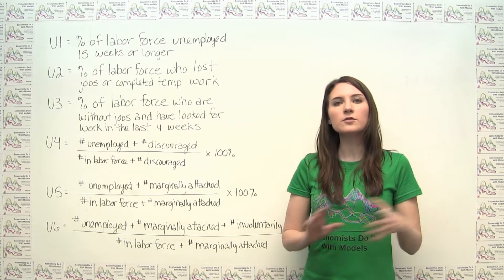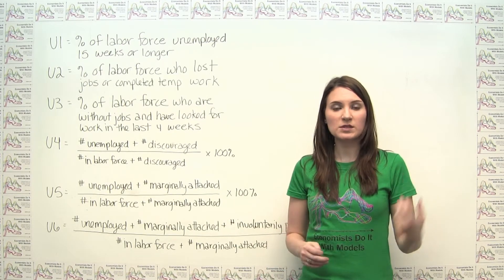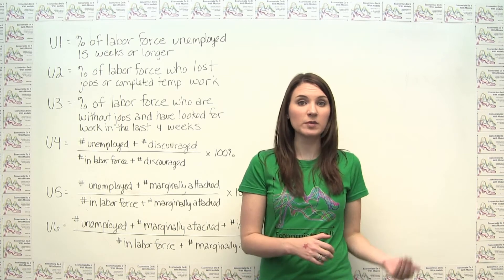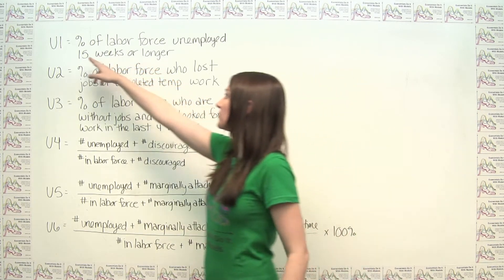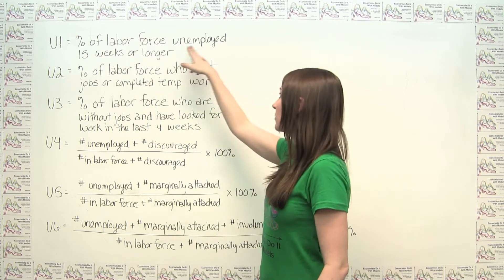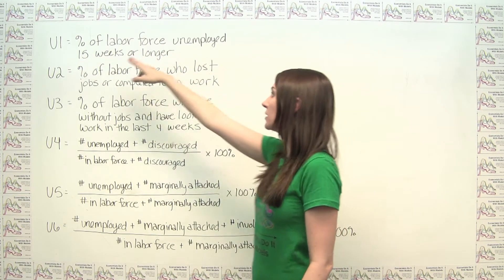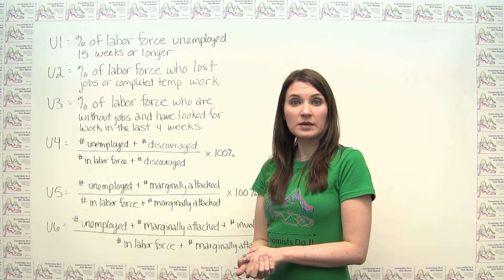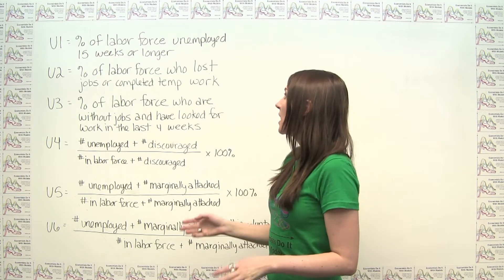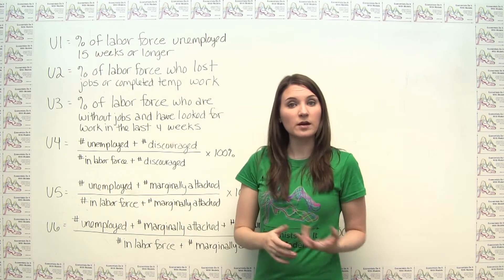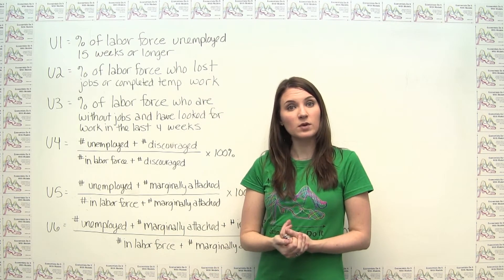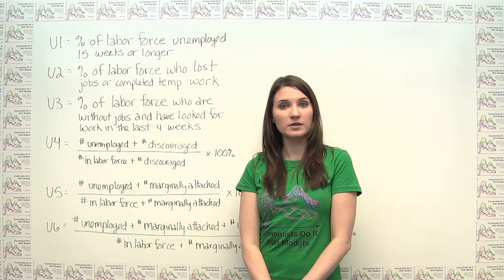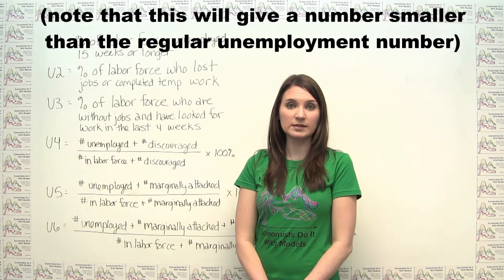We can think of U1 as a measure that specifically looks at long-term unemployment, because U1 specifically represents the percent of the labor force unemployed 15 weeks or longer. Mathematically, we can think about this as the number of people who have been unemployed for at least 15 weeks divided by the number of people in the labor force times 100%.